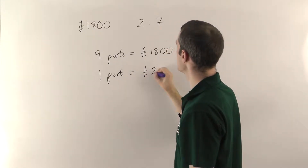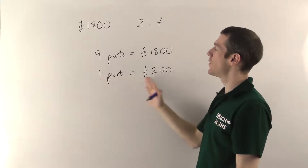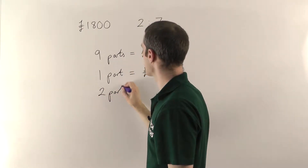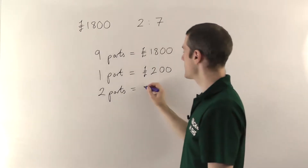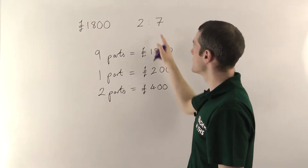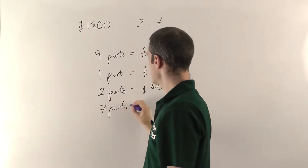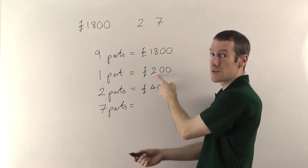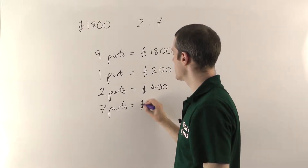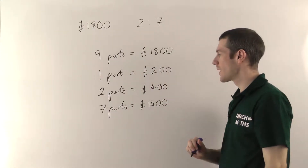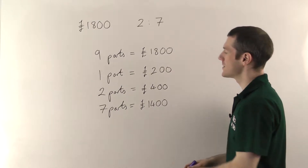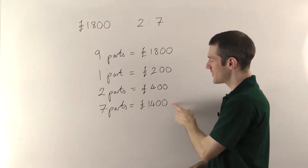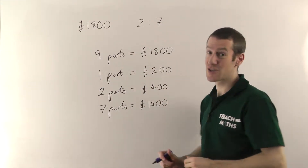One part is 200 pounds. Now that we know what one part is, it's easy to find how much everybody gets. The first person gets two parts — twice as much as one part — so they get 400 pounds. The second person gets seven parts, so seven times 200 is 1400 pounds. A good check: once you've worked out how much each person gets, add them up and you should get back to the original amount. 400 plus 1400 equals 1800 pounds, so that's correct.